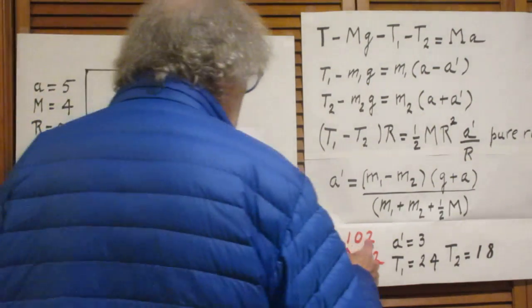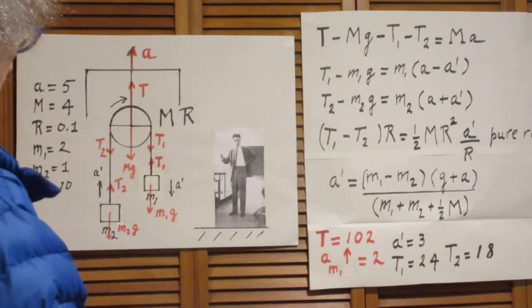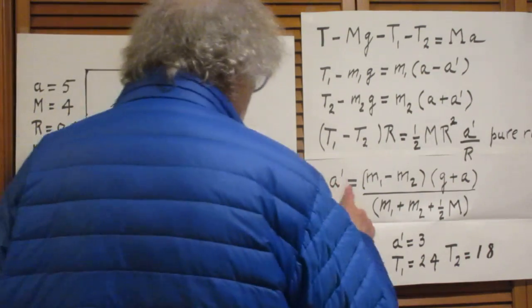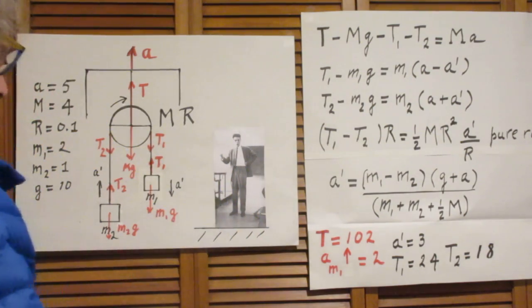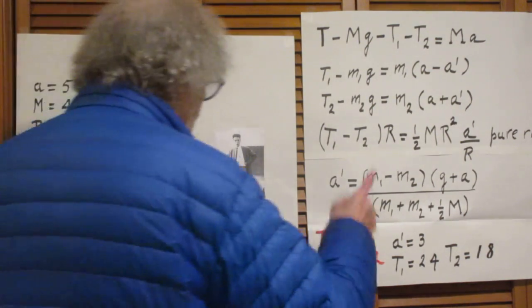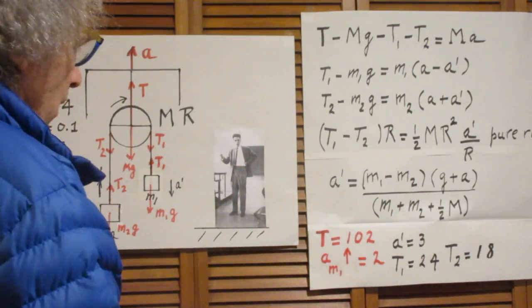If I substitute those numbers in my equations, I find for T, 102 newtons. And I find for a prime, 3 meters per second squared in this direction because it's positive, because m1 is larger than m2.